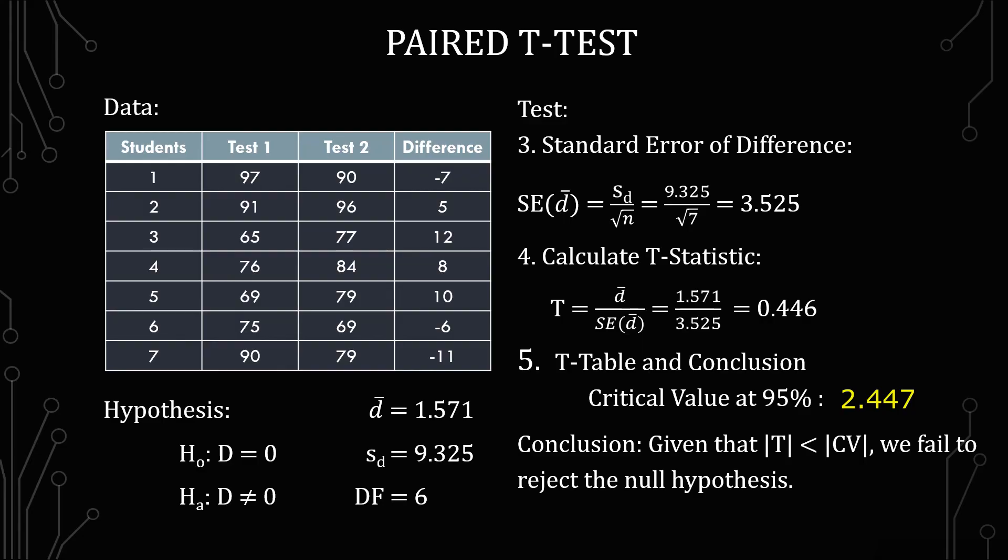Now the conclusion is that given that the absolute value of our t, which is 0.446, is less than the critical value, we fail to reject the null hypothesis.